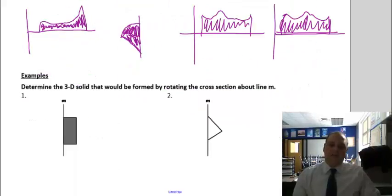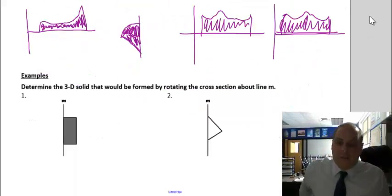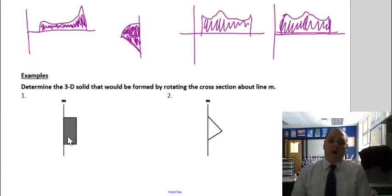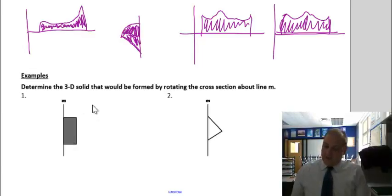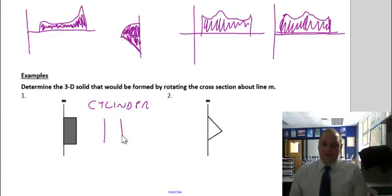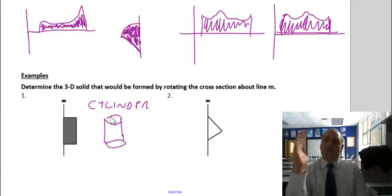So that's the idea of this lesson. Determine the 3D solid that we form by rotating the cross section. Because it's a rectangle rotating around, it's going to be just like that revolving door — what's going to be created is a cylinder. We'll draw it the best we can, and that circular thing just kind of shows the rotation.